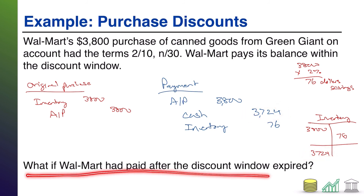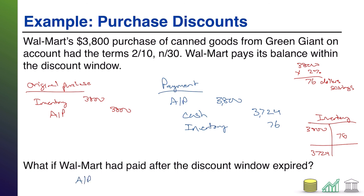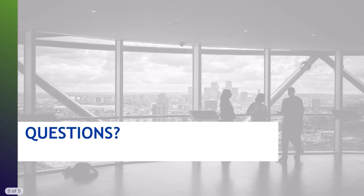There is a what-if scenario: what if Walmart had paid after the discount window expired? That's actually the easiest situation you can encounter. They still paid off their liability of $3,800 — if they pay after the discount window is over, they have to pay the full amount, and that's it. The inventory is still worth $3,800 because you paid $3,800. There's no discount to work in. That's it for dealing with purchase discounts. Hope you found this helpful and join me for another video.